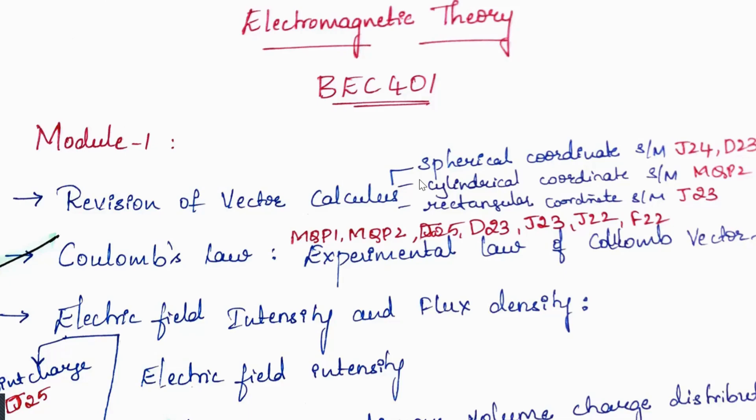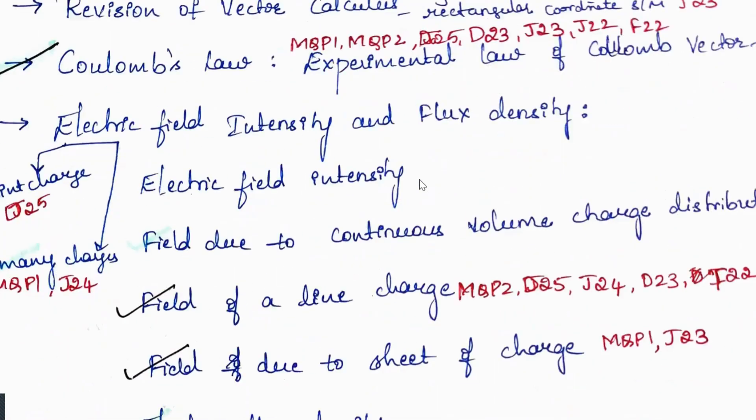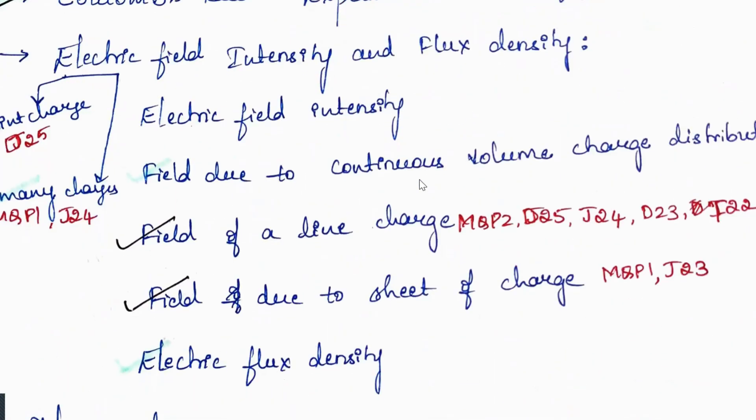The first part will be regarding vector calculus and Coulomb's law, and the second part will cover electric field intensity and flux density. In this session we will learn about vector calculus — that is, the spherical coordinate system, cylindrical coordinate system, and rectangular coordinate system — and Coulomb's law, which is an experimental law, including its vector form.